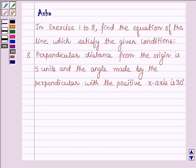Hello and welcome to the session. In exercise 1 to 8, find the equation of the line which satisfies the given conditions. The 8th one is: perpendicular distance from the origin is 5 units and the angle made by the perpendicular with the positive x-axis is 30 degrees.